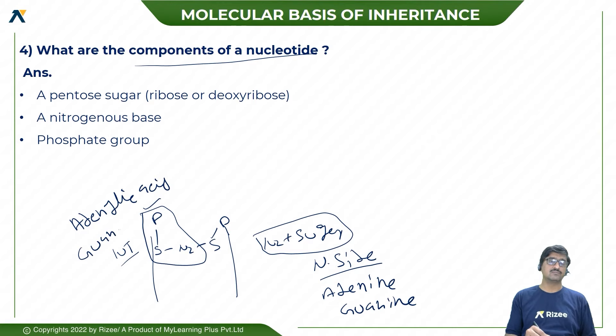A nucleotide is composed of pentose sugar - ribose or deoxyribose. RNA contains ribose sugar. DNA contains deoxyribose sugar and nitrogen base.